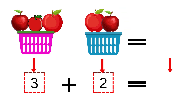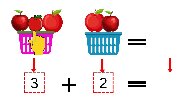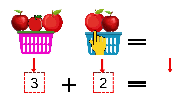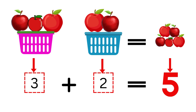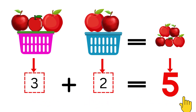Now let's count together: one, two, three, four, five. In total, we have five apples. Which means three plus two is equal to five.